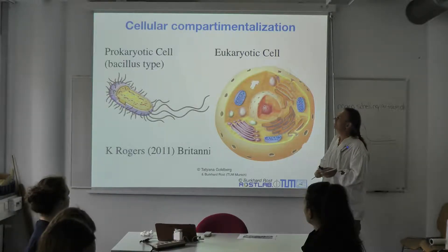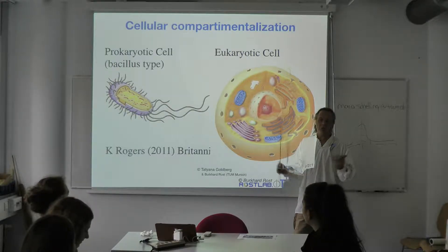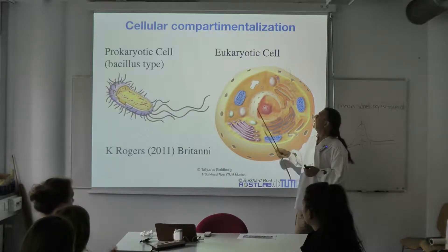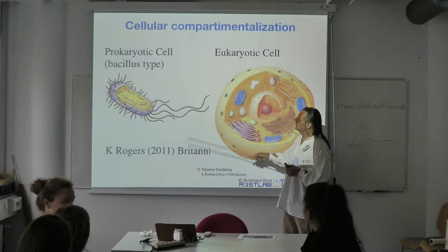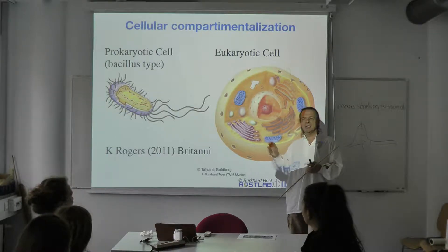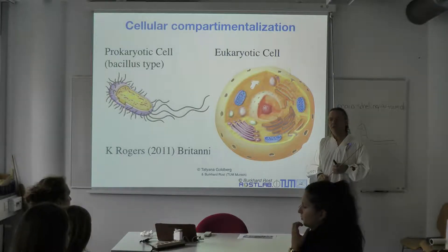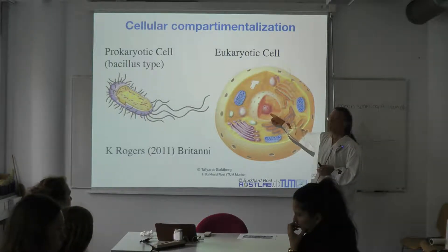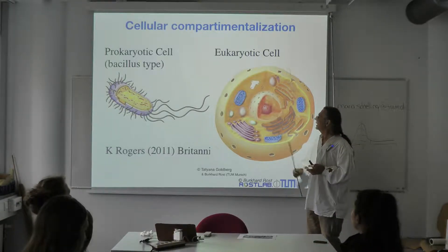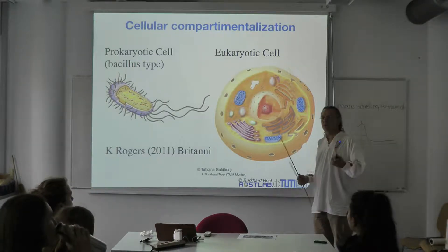The difference between these two is the word 'karyot' — the Greek word for core. Pro means before the core was invented. Eukaryotes are the ones with the core. Prokaryotes don't have a nucleus. In eukaryotes, the nucleus is surrounded by a membrane. DNA — essentially our genome, the three gigabases — sits in there, protected by two layers of lipids. There are other particles also protected there.